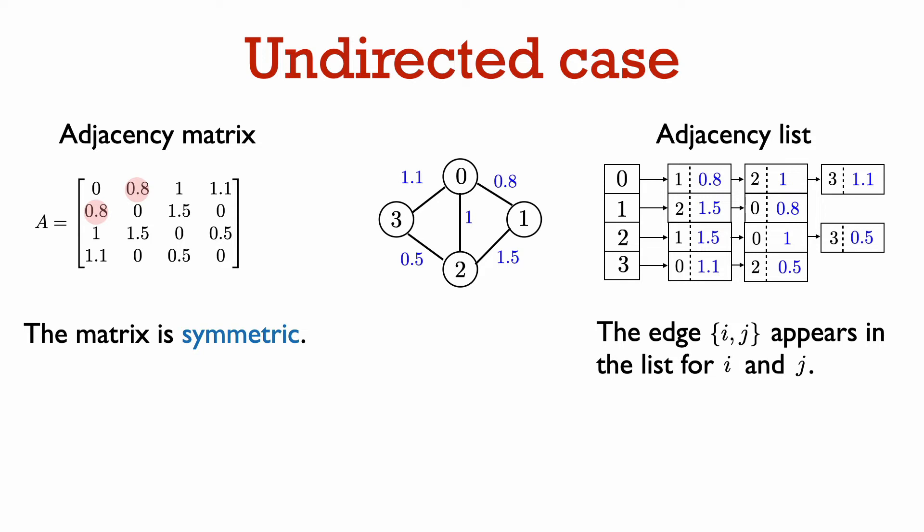Since this is true for every edge, in the undirected case the adjacency matrix is always going to be a symmetric matrix — that is, the (i,j) entry is always equal to the (j,i) entry. In the adjacency list representation as well, the edge between vertex 0 and 1 appears twice: in the list for vertex 0 and also in the list for vertex 1. So when we add an undirected edge to the adjacency list, we add it in two locations — both to the list associated with vertex i and the list associated with vertex j.